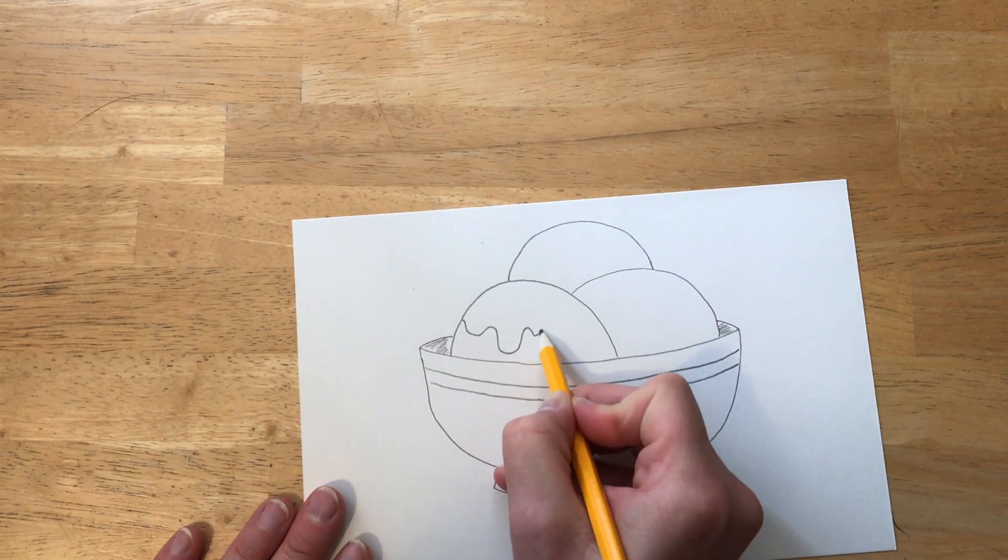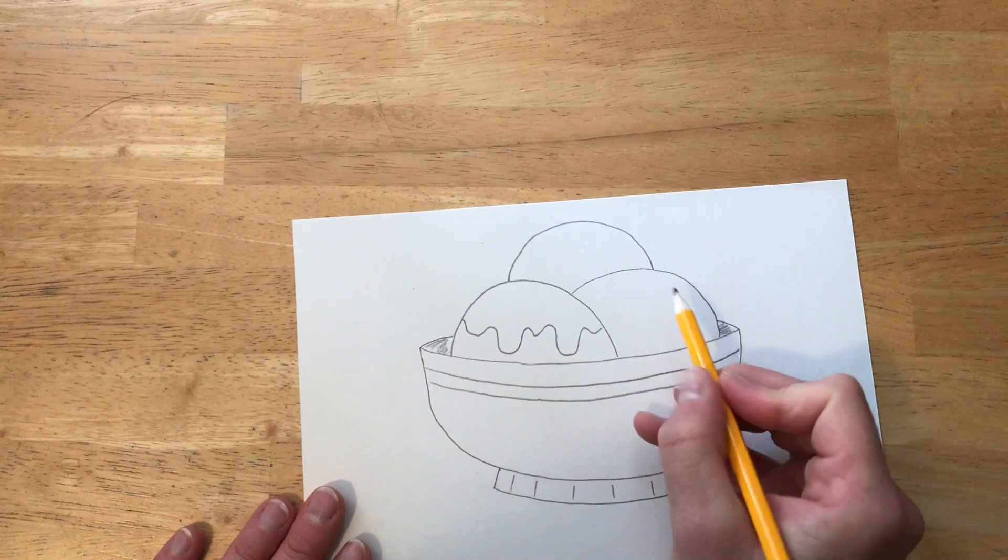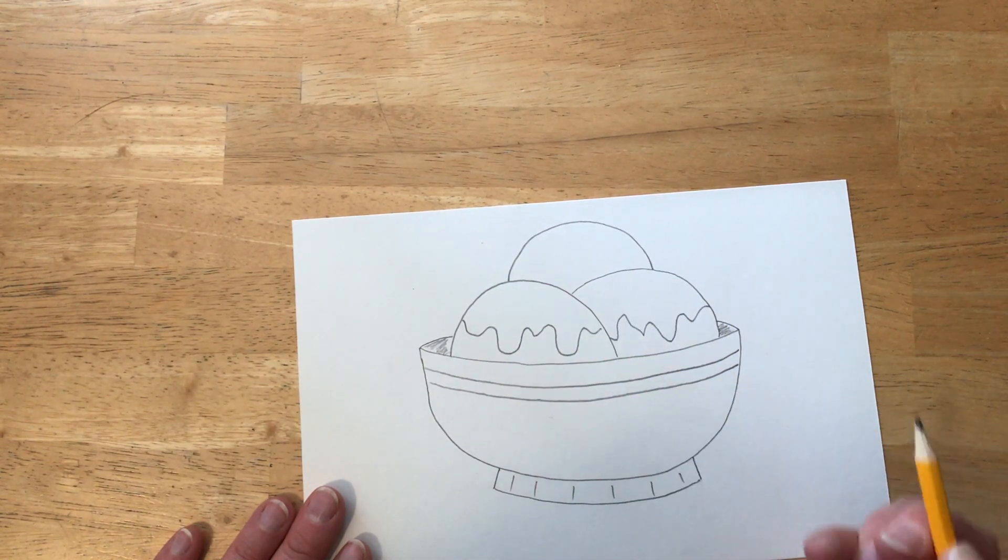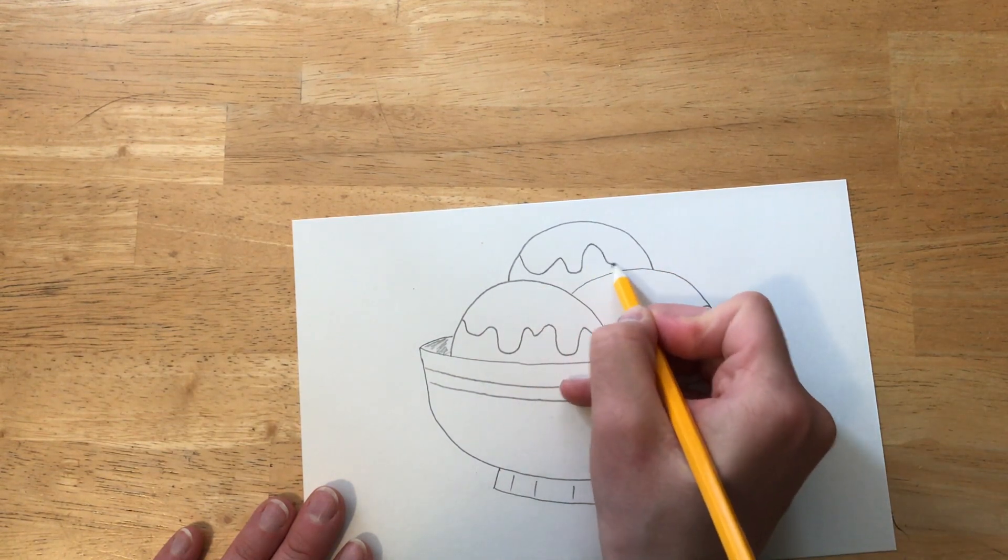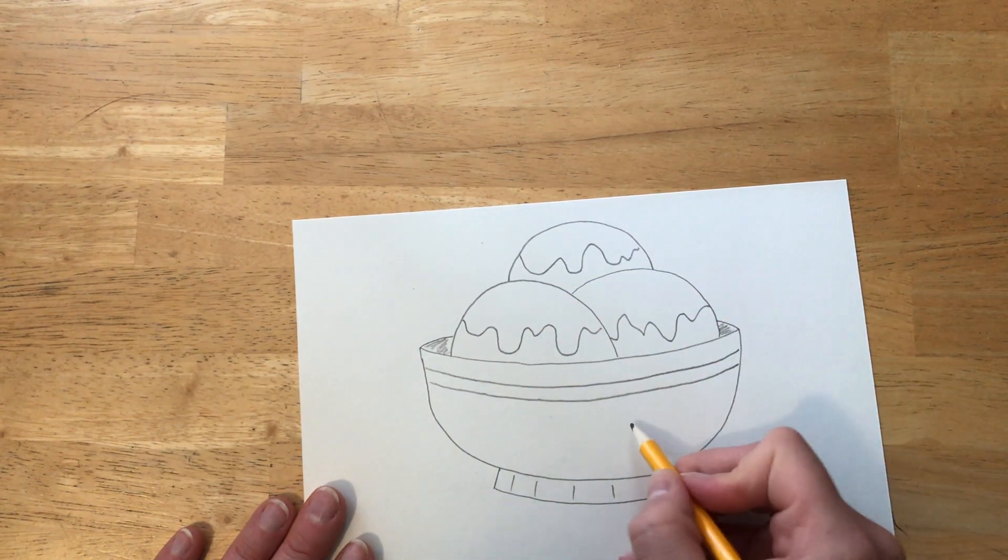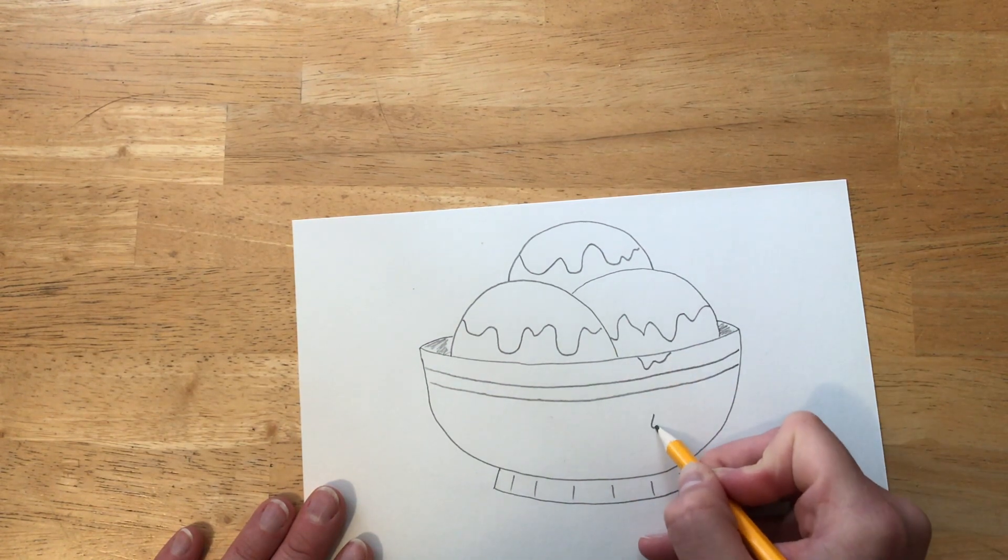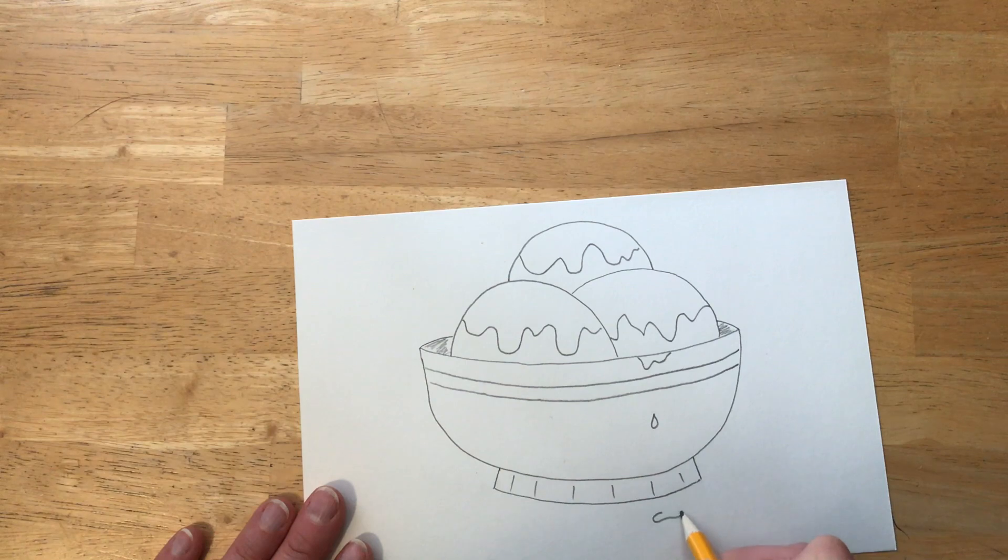I am going to add a wavy line for some syrup. Maybe it's chocolate or strawberry or caramel. It's your ice cream so it's up to you! I think my sauce is going to be dripping all over the place.